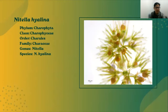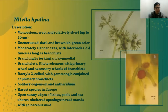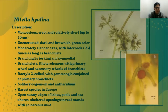Another algal species from the family Characeae is Nitella hyalina, a macroscopic green alga — a stonewort. It is monoecious, erect, but relatively short, up to 30 cm. Plants are dark or brownish-green and usually unencrusted. Axes are moderately slender, up to 0.7 mm in diameter. Internodes are two to four times as long as branchlets. Branchlets are usually eight, with the primary whorl and accessory whorls of branchlets. The dactyls are two-celled, and the gametangia are conjoined at the primary branchlets. Oogonium and antheridium are solitary, up to 0.4 mm in diameter. Nitella hyalina has a cosmopolitan distribution, but it is rare and local almost everywhere. It usually prefers open sunny edges of lakes, pools, seashores, and sheltered openings in reed stands with calcareous mud, and can withstand some dehydration when water levels drop in summer.